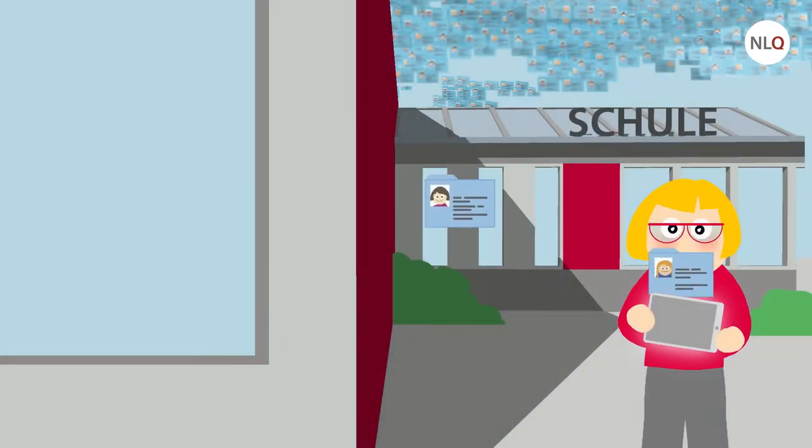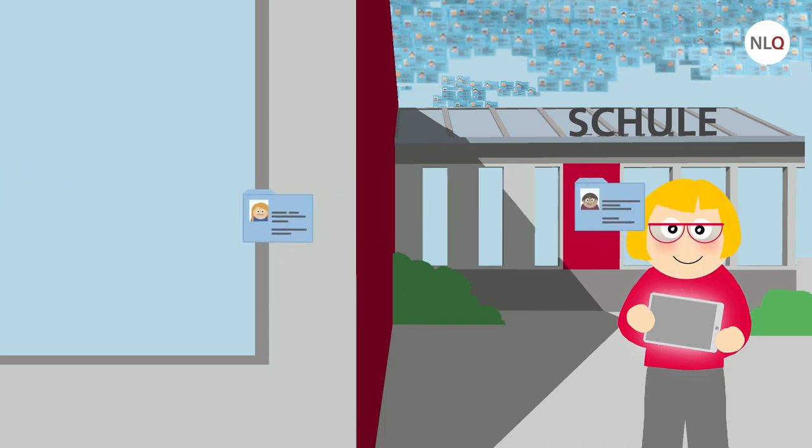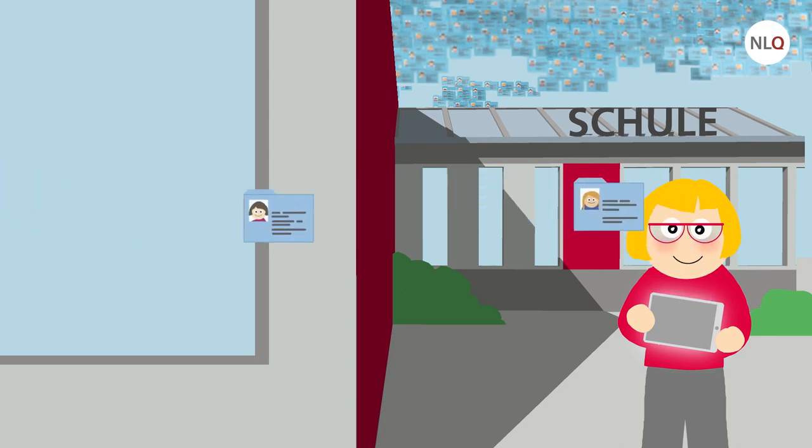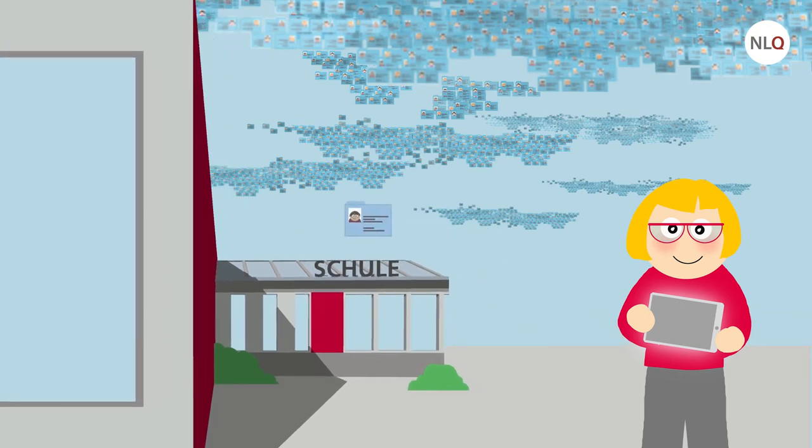Und dann stellt sich wieder die Frage des Eingabegerätes. Wir erinnern uns daran, was wir im ersten Kurs gelernt haben: Nutzt eine Lehrkraft ein privates Endgerät, gelten die gleichen Regeln natürlich auch für externe Lernplattformen oder Drittanbieter. Im Idealfall wäre ein Schul-PC mit Anbindung an das Schulnetzwerk zu nutzen. Werden private Endgeräte genutzt, muss als Grundregel sichergestellt werden, dass das Gerät ausschließlich als Ein- oder Ausgabegerät genutzt wird und die Daten nicht lokal gespeichert werden. Für Ausnahmen von diesem Grundsatz können Sie nochmal in den ersten Kurs schauen.